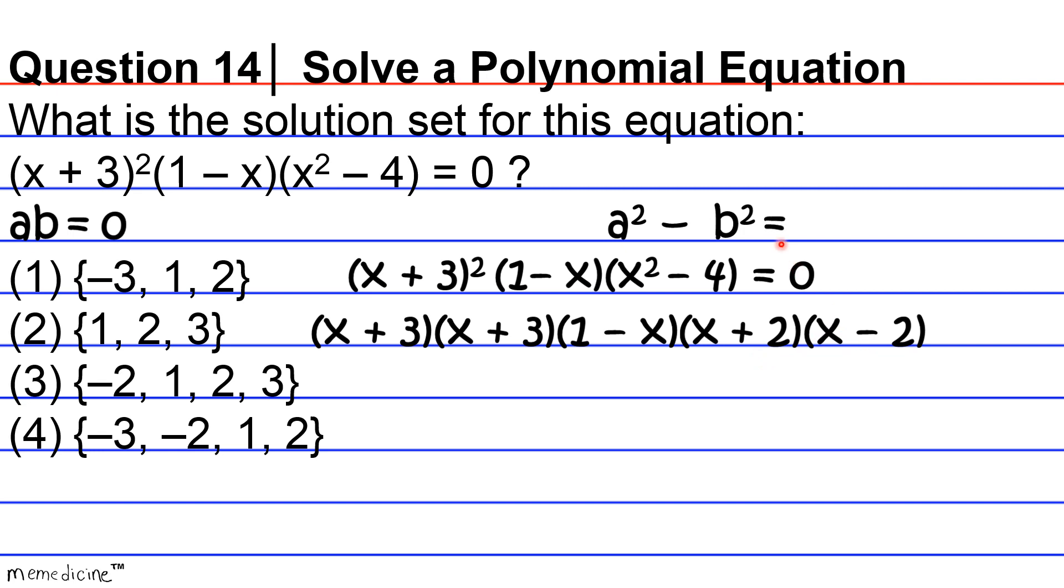That factors into a plus b times a minus b. And notice here that the factors are just conjugates of each other, meaning they have the same monomial terms, and they're separated by addition or subtraction, hence being conjugates of each other.